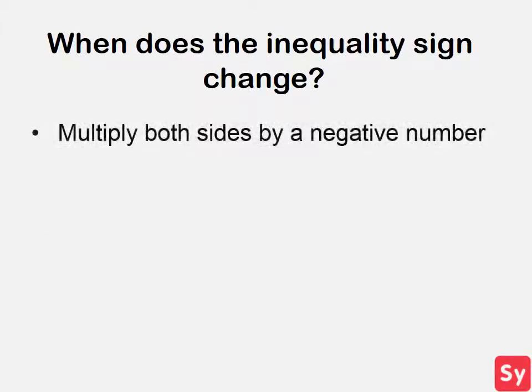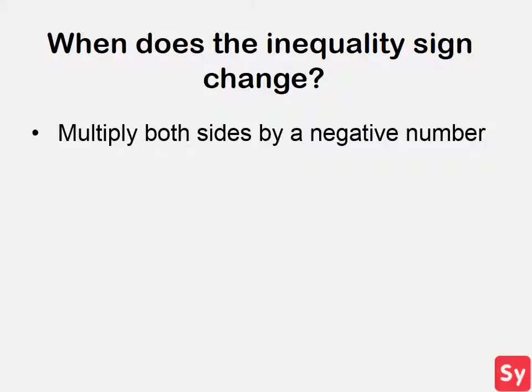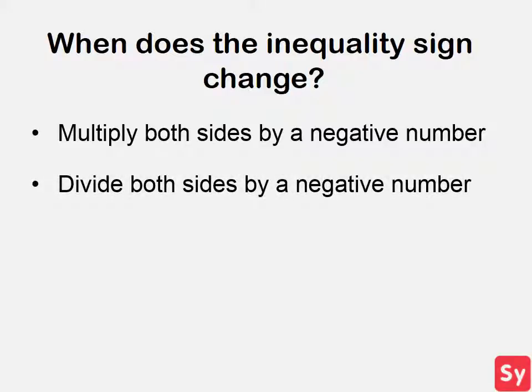The inequality sign changes when you multiply both sides of the inequality by a negative number and when you divide both sides of the inequality by a negative number. Here's a short example of when the inequality sign changes. When you multiply both sides of the inequality by negative 1, the sign changes directions.